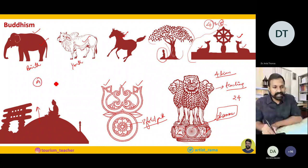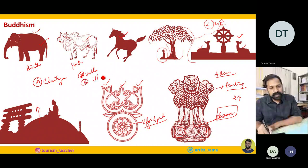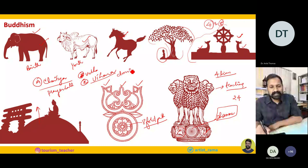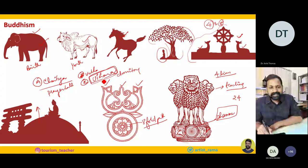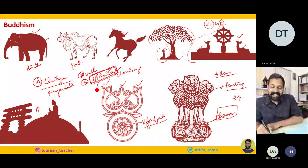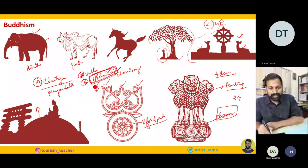Two important words: Chaitya and Vihara. Chaitya is a prayer hall, and Vihara is a dormitory. The word Vihara means 'roaming around' — whenever monks were roaming and needed accommodation, that was called Vihara. The state of Bihar gets its name from Vihara. Wherever they stayed, they wanted a place to pray — they carved out prayer halls nearby where they never stayed but only prayed. Those prayer halls were called Chaityas. When you visit a Chaitya or Stupa, that symbolizes the Mahaparinirvana of Buddha.